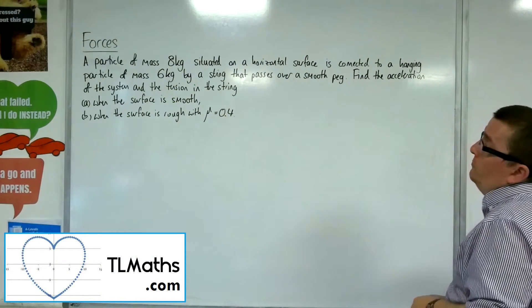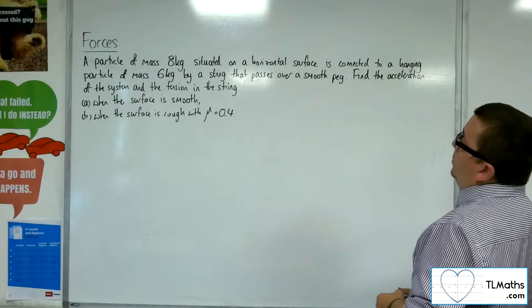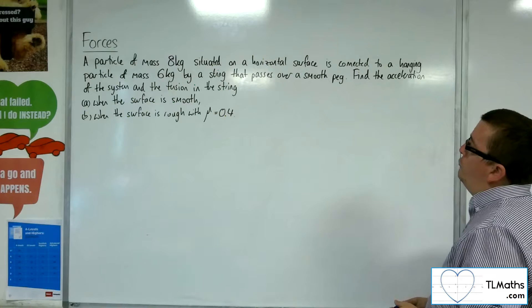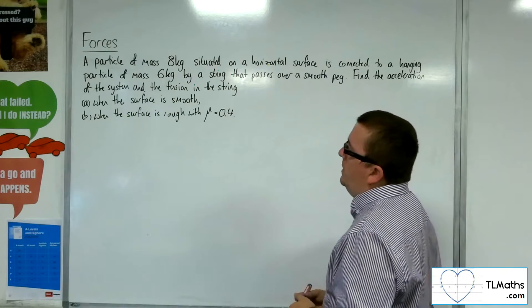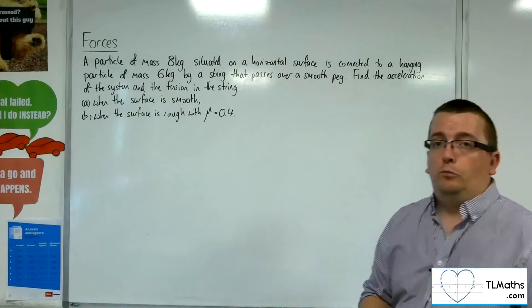Okay, so in this video, a particle of mass 8 kilos situated on a horizontal surface is connected to a hanging particle of mass 6 kilos by a string that passes over a smooth peg. Find the acceleration of the system and the tension in the string when the surface is smooth and when the surface is rough with mu equals 0.4.